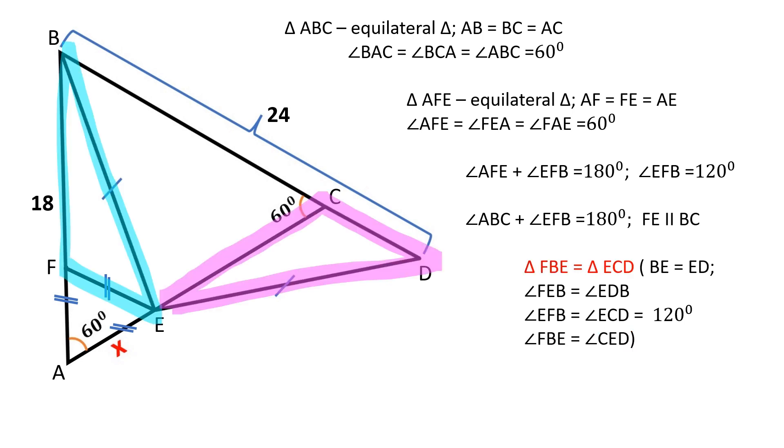Therefore, triangles FBE and ECD are congruent. FE equals CD and FE equals AE.